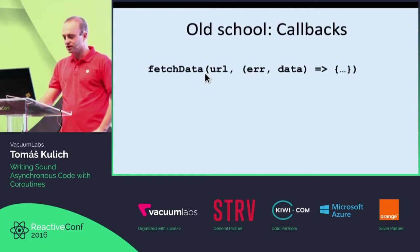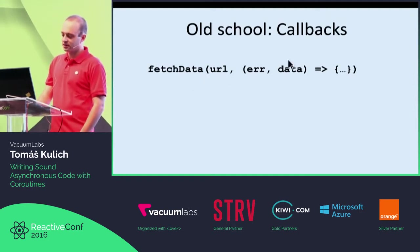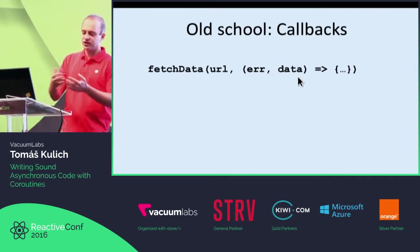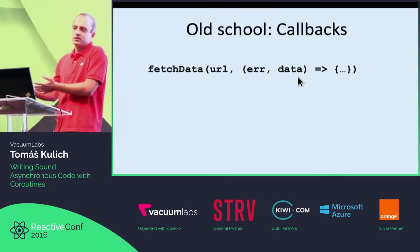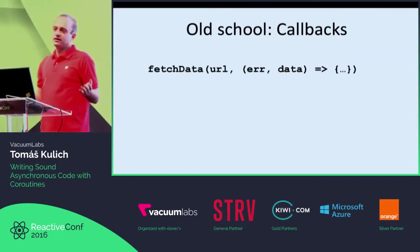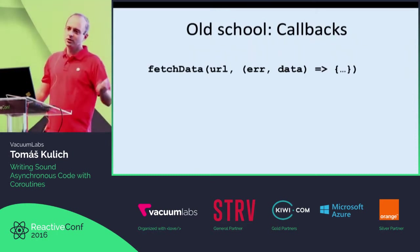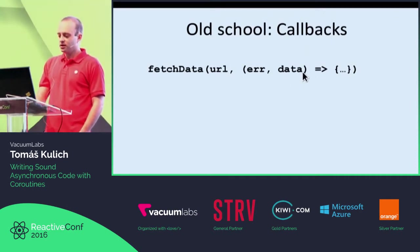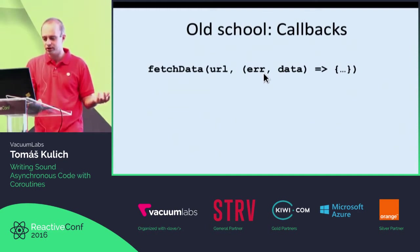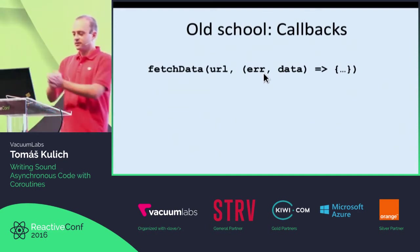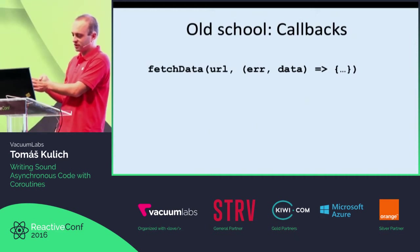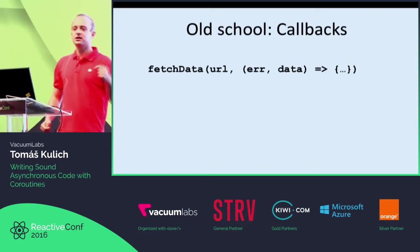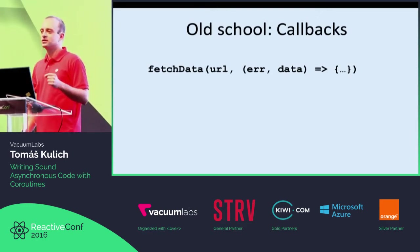Here we call some function, we give it some argument, and typically the last argument is the so-called callback function. This function, fetchData, can take some time to actually compute the response to us. And after this time — it may be a while, it may be a longer time — then the callback is called with the corresponding data, or an error if there was some problem during the computation. This was the very first thing introduced in JavaScript. It's extremely simple, conceptually simple, but writing code with callbacks is actually not so simple.